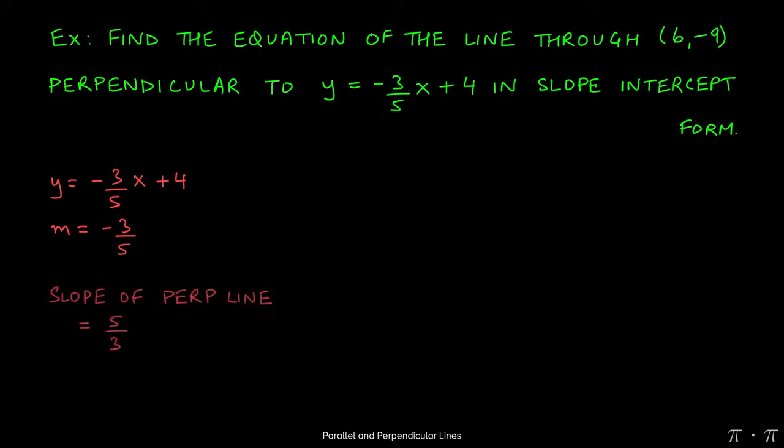Now knowing what we know about perpendicular lines, which is that they have negative inverse slopes of each other, the negative of a negative would be a positive, and the inverse of 3/5 would be 5/3.